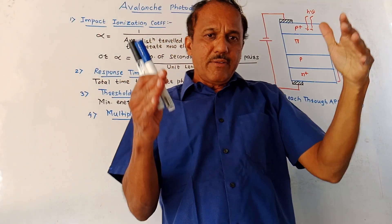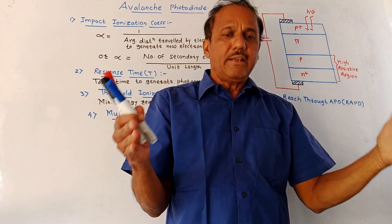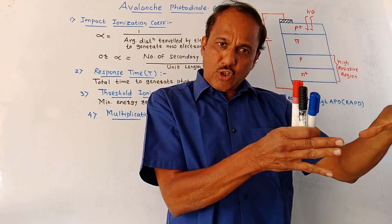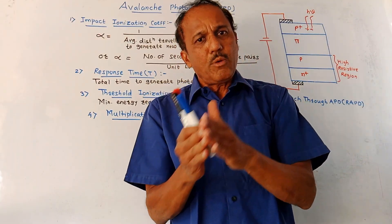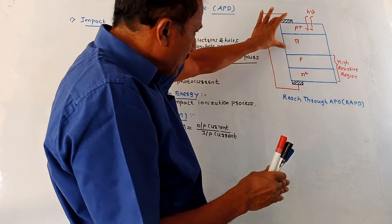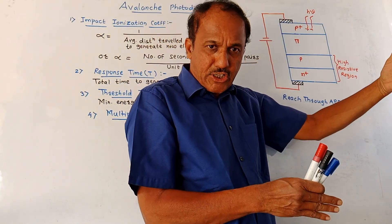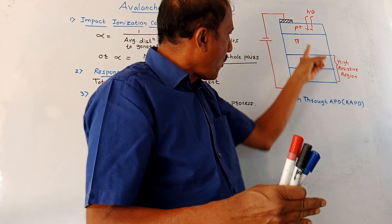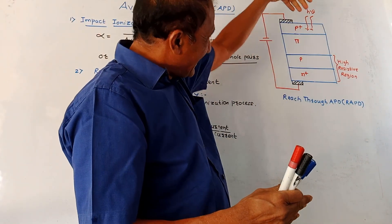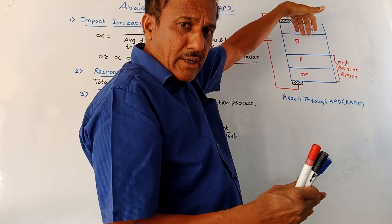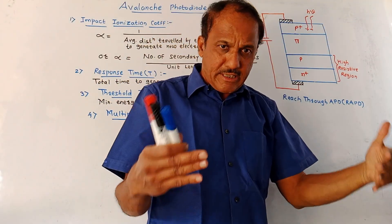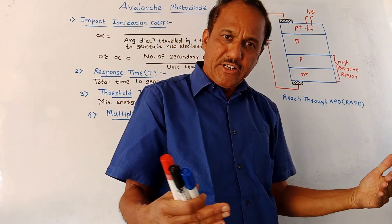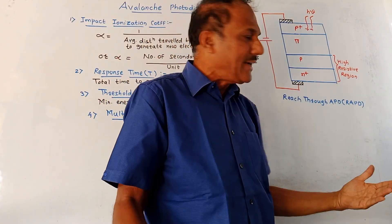Incoming light is allowed to fall on the top P plus layer. Whenever photons fall on semiconducting material, due to the energy contained in the photon when they strike on the material, electron hole pairs are generated. The width of the pi layer is more compared to the other regions, so maximum number of electron hole pairs are formed in the pi layer. These electron hole pairs try to move with their saturation velocity in the direction of the applied electric field.